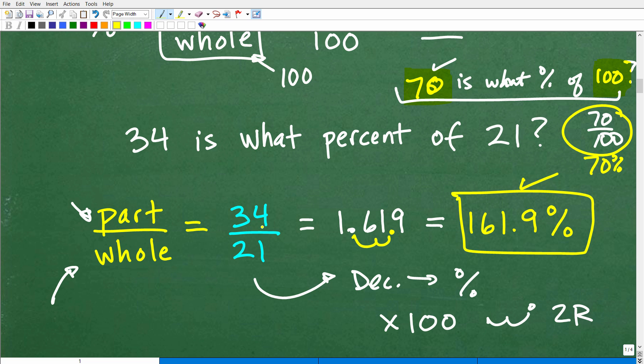Here, 34 is 161.9% out of 21. Okay. Or of 21. So 34 is 161.9% of 21. Again,